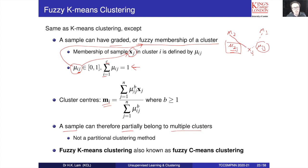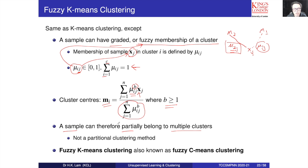The idea is that we account for all the membership grades associated with each sample J, sum them up, and divide by the total sum of the membership grades. This value B is the fuzzifier, and it must be greater than or equal to 1. In the coming slides, I'm going to explain this concept in a more concrete way.